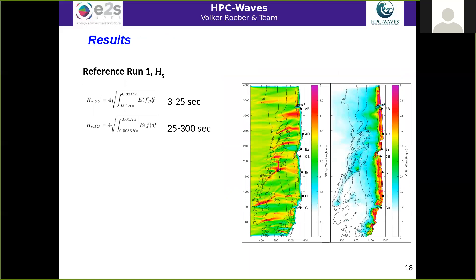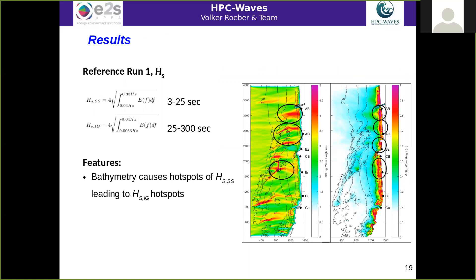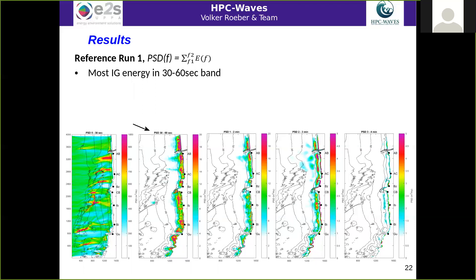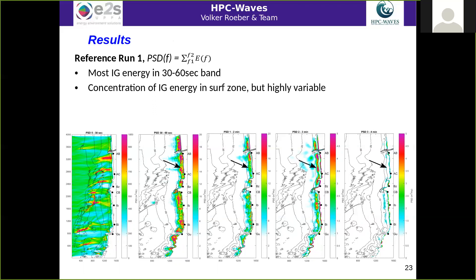Looking at reference run one, the mean sea level scenario, we divide the significant wave height into a swell band and an infragravity band. We can already see that the bathymetry is a driving factor causing hotspots and cold spots in both infragravity and gravity swell. The decrease of swell wave energy at the breaking point at about 5-meter water depth leads to an increase in infragravity waves near shore. It's also noticeable that infragravity waves are not only confined to the shoreline and the surf zone, but can also be found in water depths between 20 and 40 meters offshore. Most of the infragravity energy is in the short IG band between half a minute and one minute.